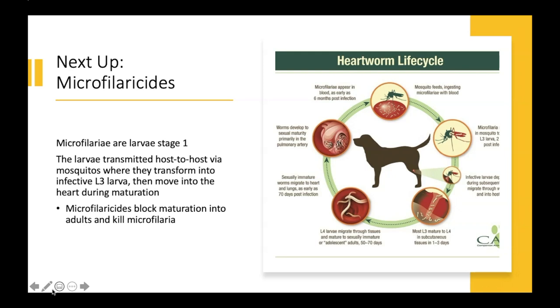Moving on — so we talked about adulticides, the main one being Immiticide (trade name) or melarsamine (generic name). Now we're going to look at microfilaricides. It was the macrolides we talked about earlier in regard to continuous slow kill.